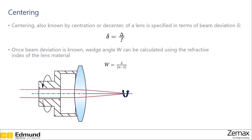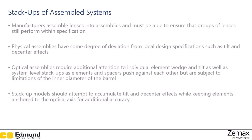The way we test for these types of things is known as centering, also called centration or de-center, and it's specified in terms of beam deviation. Beam deviation is calculated by shining a light through the lens and looking at where it is focused. As the lens is rotated, the spot will make a circle if the lens is de-centered, and the distance from the center of that circle to where the beam is focused is the displacement of the beam. Beam deviation is the displacement divided by the focal length of the lens. Once beam deviation is known, we can calculate the wedge angle using the refractive index of the lens — wedge angle equals beam deviation divided by refractive index minus one — and this plays into calculating things having to do with tilt.